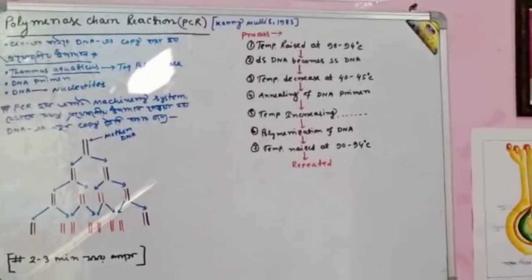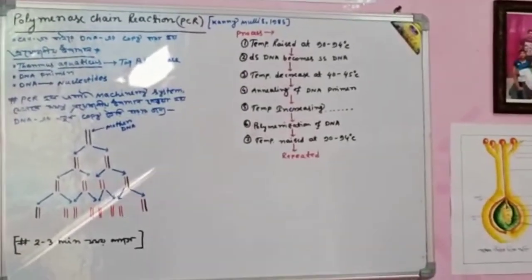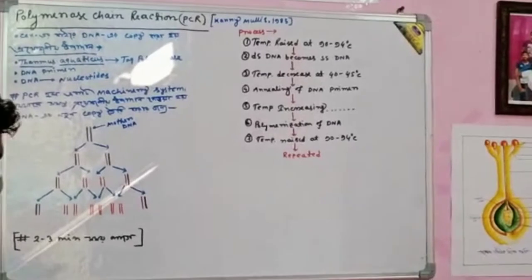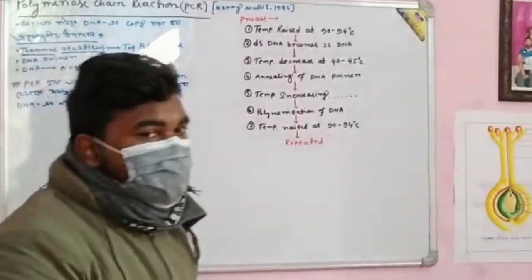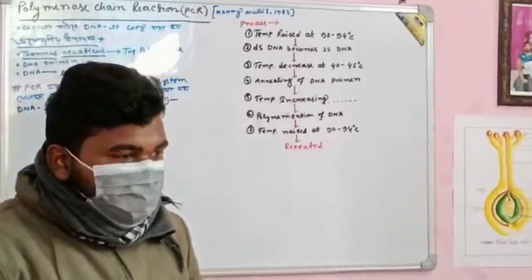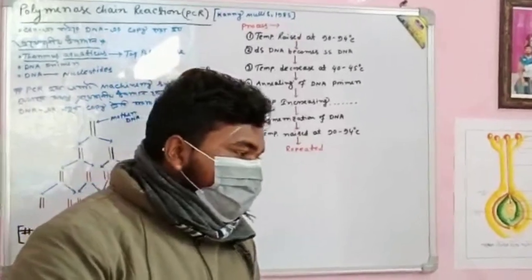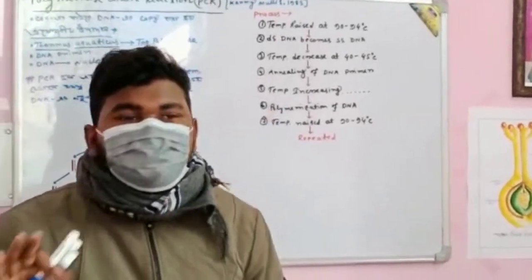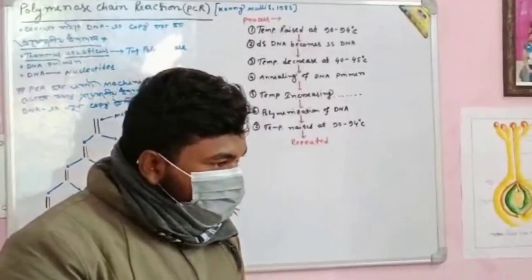This is the question that we know about the polymerase chain reaction, which is PCR. The first thing is the replication. This is the host cell, which is the bacteria cell.